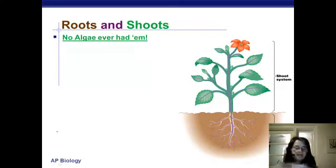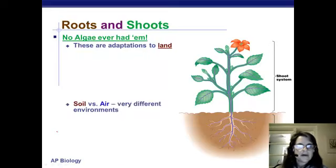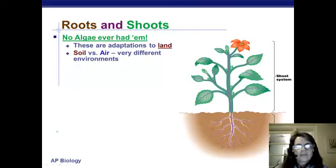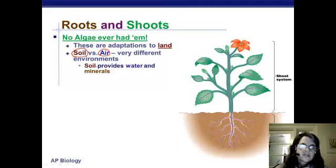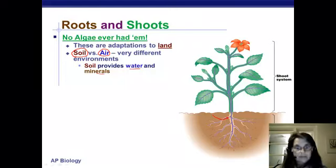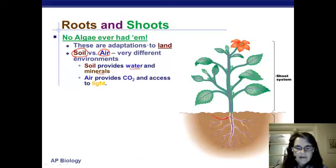Roots and shoots are two main areas of plant anatomy. Note that no algae ever had them — we don't really see roots and shoots until ferns and beyond. They contain vascular tissue and are adaptations to land, dealing with the very different environments of soil and air. Soil provides water and dissolved minerals, so roots must be able to take in water by osmosis and cannot be protected with wax.